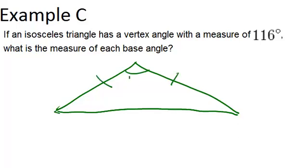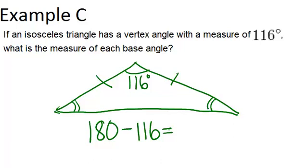If those two sides are congruent, this is the vertex angle at 116 degrees. The base angles are the other angles in the triangle, and they will always be congruent. We can figure out what the sum of the base angles should be by doing 180 minus 116, because that will give us the rest of the triangle, since the whole triangle has to add up to 180. So 180 minus 116 is 64.